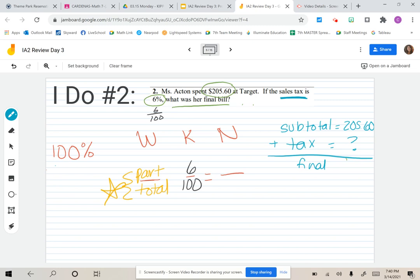We're going to do two steps in this problem. First, we'll find the amount of tax, then add it to the subtotal to find her final bill. We can use T for tax because that's what we're finding first. We know that her subtotal is $205.60, so that goes into our proportion.